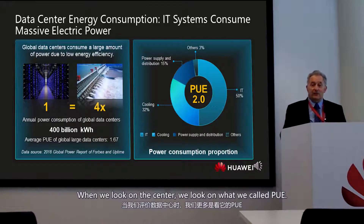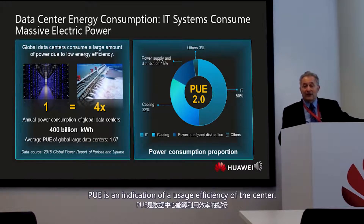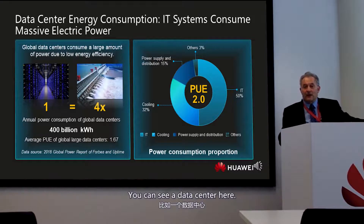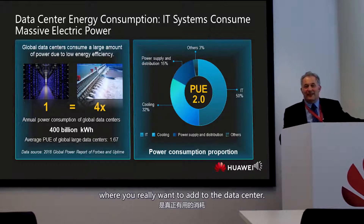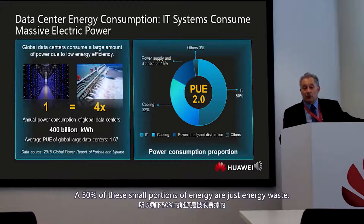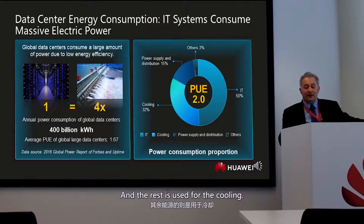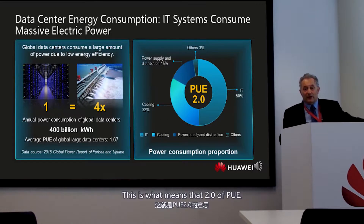What do we look at in a data center? We look at what we call PUE — Power Usage Effectiveness — an indication of energy usage efficiency. When you have a PUE of 2.0, it means that half of the energy is used by your IT load, which is what you really want. The other 50% is wasted in energy distribution. Practically, you pay for 100 and only use 50.